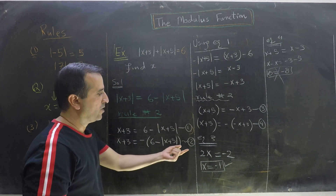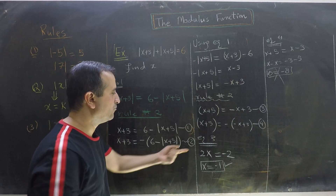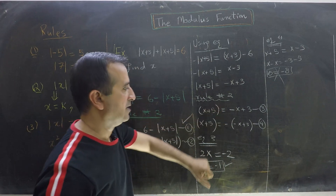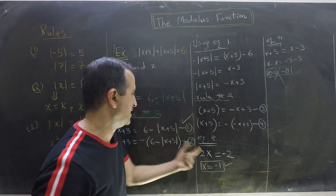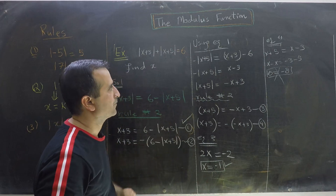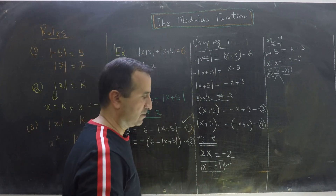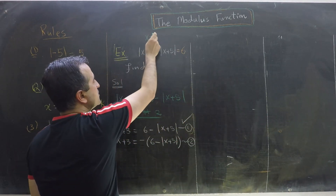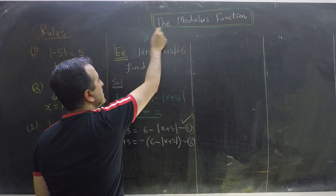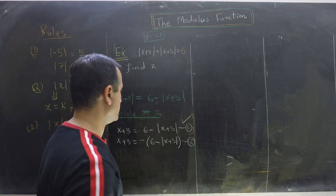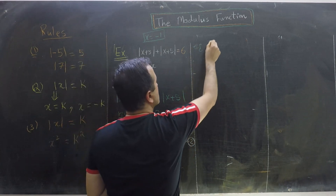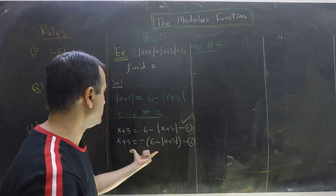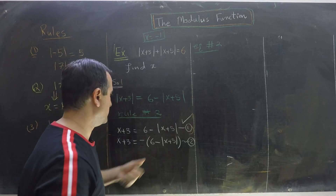We are now done with Equation 1. Equation 1 created Equations 3 and 4, and we found one value of x. So far x equals minus 1 is one answer. Now we are going to use Equation 2. Let me clear the board. We need to simplify and rewrite Equation 2.